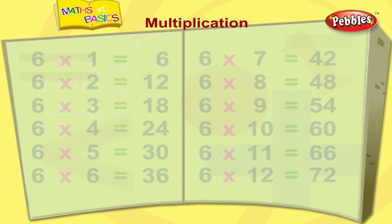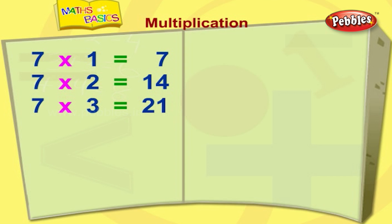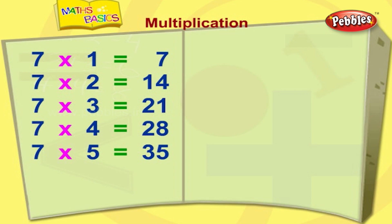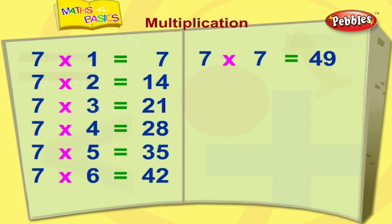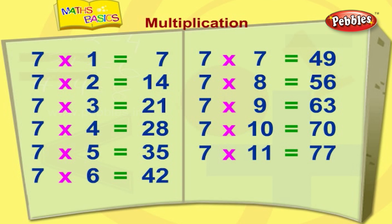Seven ones are seven. Seven twos are fourteen. Seven threes are twenty-one. Seven fours are twenty-eight. Seven fives are thirty-five. Seven sixes are forty-two. Seven sevens are forty-nine. Seven eights are fifty-six. Seven nines are sixty-three. Seven tens are seventy. Seven elevens are seventy-seven. Seven twelves are eighty-four.